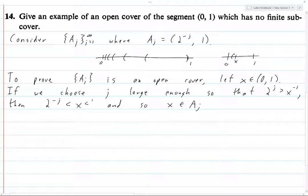Because a j is the open interval from 2 to the minus j to 1. So if we want to be even more specific here, x is between 2 to the minus j and 1. Okay, so it's an open cover. If we choose, we can choose j large enough and show that there is some j such that x is in a j and this holds for every single x and therefore this collection of a j's is an open cover of the open interval from 0 to 1.